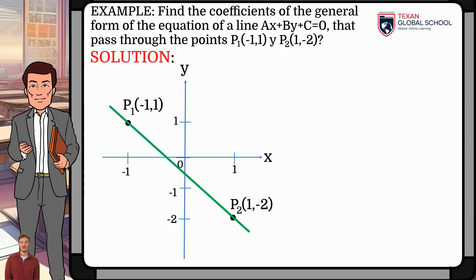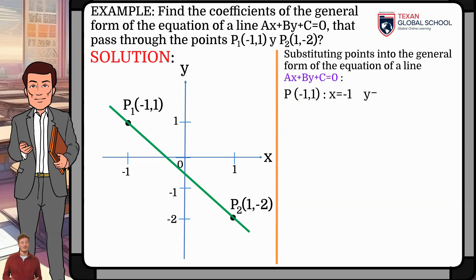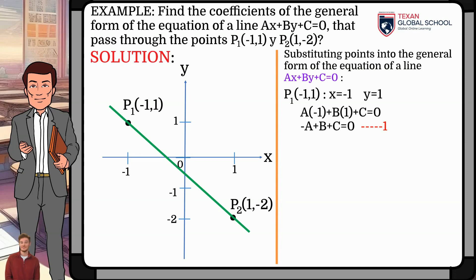Since the points are on the line, their coordinates must satisfy the equation. Therefore, derived from the first point, x is equal to −1 and y is equal to 1. Substituting into the general form of the equation of a line, we obtain a times (−1) plus b times 1 plus c equals zero. So we have a first equation: −a + b + c = 0.